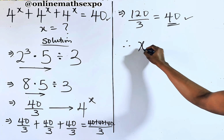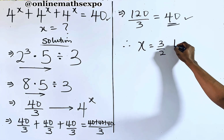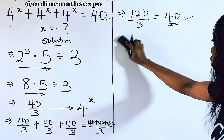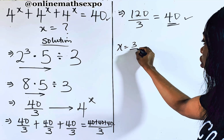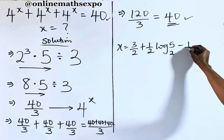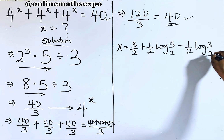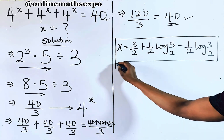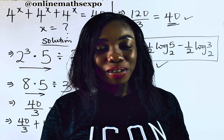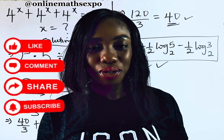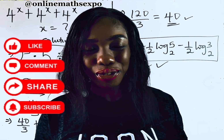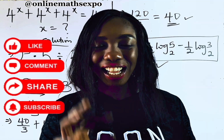So it means that x equals 3 over 2 plus one-half log 5 base 2 minus one-half log 3 base 2 is absolutely correct. I hope you really learned something today. Don't forget to like this video, share with your friends, and if you are still new, hit that subscription button. We have a lot to give you every day. Thank you for always choosing to learn with us. I'll see you in our next class. Bye-bye.